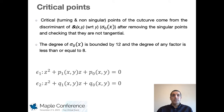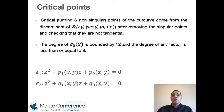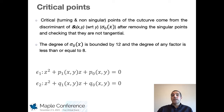Now let's see how we can determine critical points. Critical points of the cut curve, turning and non-singular, come from the discriminant of S0 with respect to the y variable — call it sigma0 — after removing the singular and tangential intersection points. These points belong to the tangential and vertical lines to the cut curve, and will be important in the discretization of this curve. Using Maple, it was possible to analyze sigma0 and conclude that its degree is bounded by 12 and any degree of any factor is less than or equal to 8.